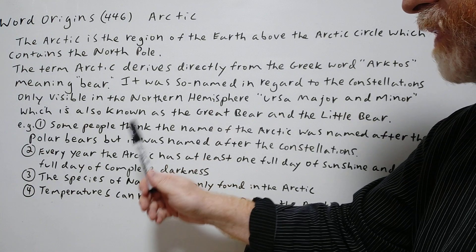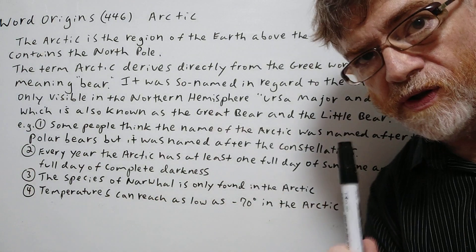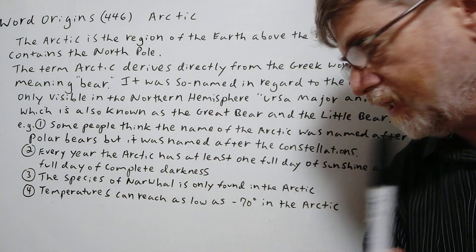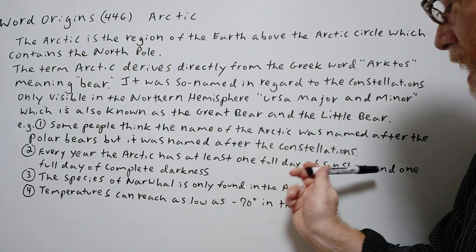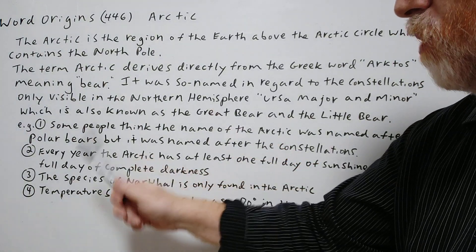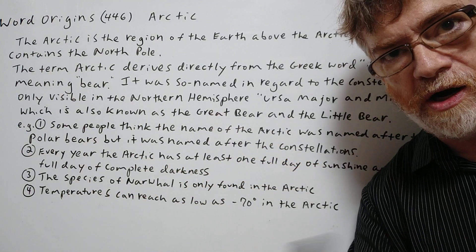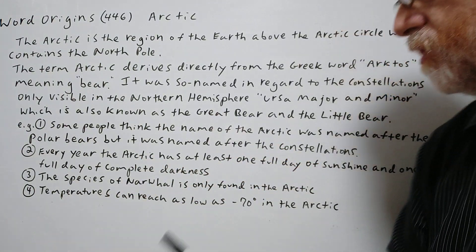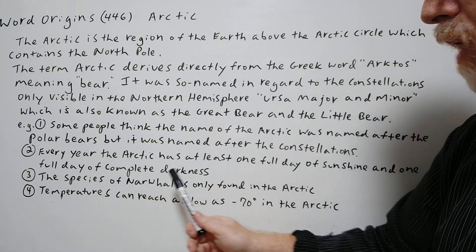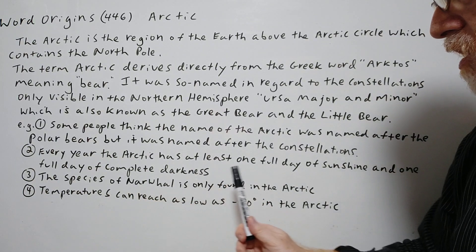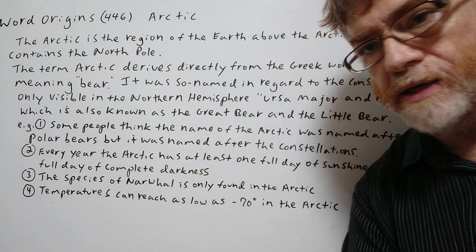Number two: every year the Arctic has at least one full day of sunlight and one full day of complete darkness. Number three: the species of the narwhal is only found in the Arctic.